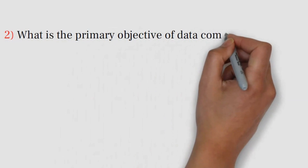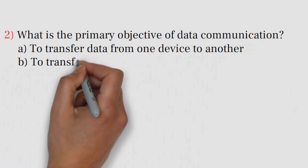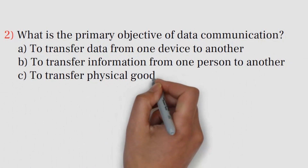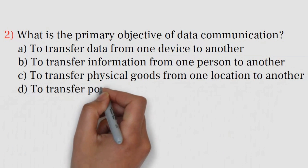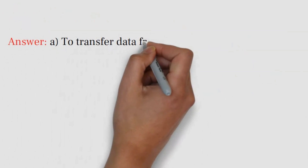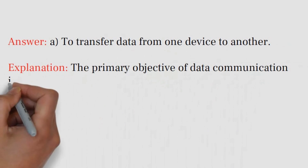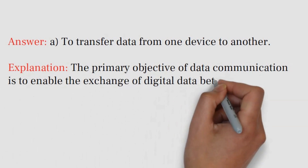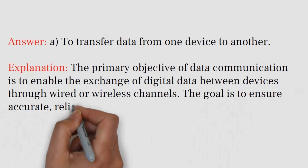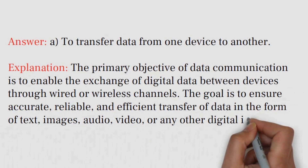Question number two: What is the primary objective of data communication? A) To transfer data from one device to another, B) To transfer information from one person to another, C) To transfer physical goods from one location to another, D) To transfer power from one device to another. Answer: A) To transfer data from one device to another. Explanation: The primary objective of data communication is to enable the exchange of digital data between devices through wired or wireless channels, ensuring accurate, reliable, and efficient transfer of data in the form of text, images, audio, video, or any other digital information.